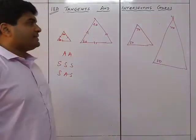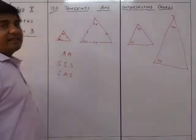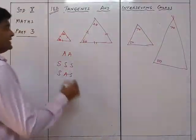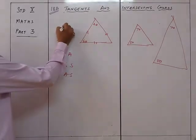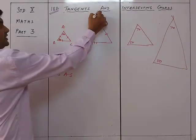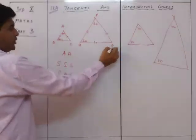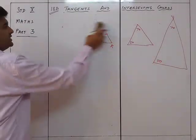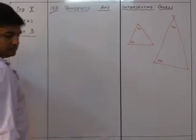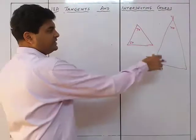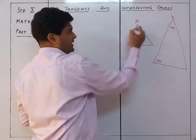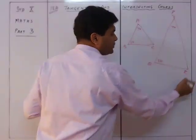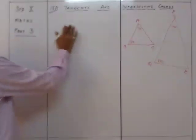Once triangles are similar, the ratios of their corresponding sides are equal. Suppose triangle ABC is similar to triangle PQR, then AB/PQ = BC/QR = AC/PR.